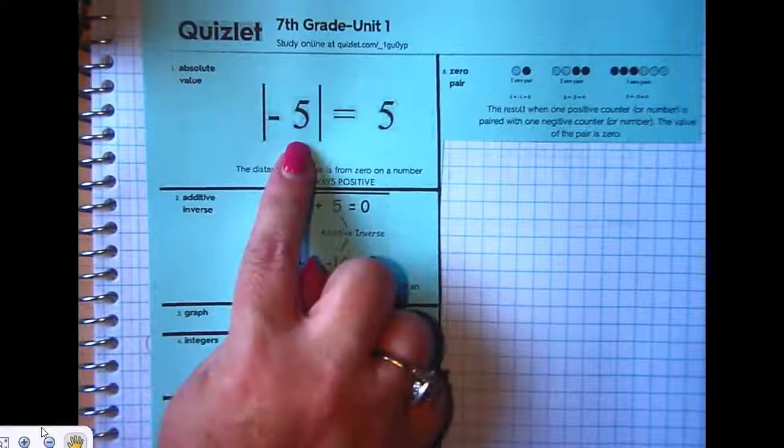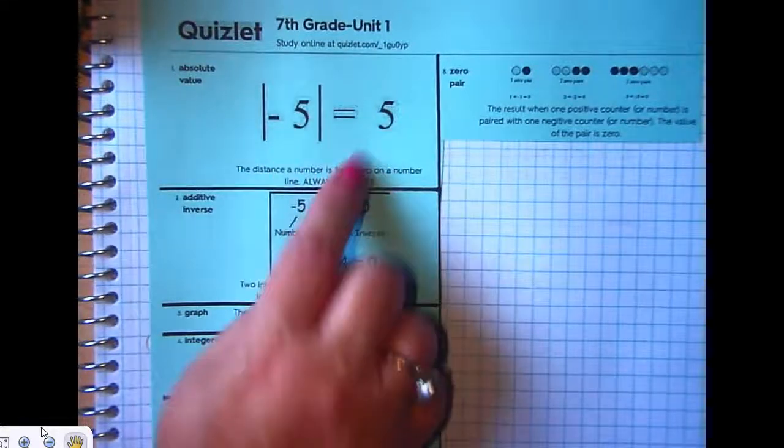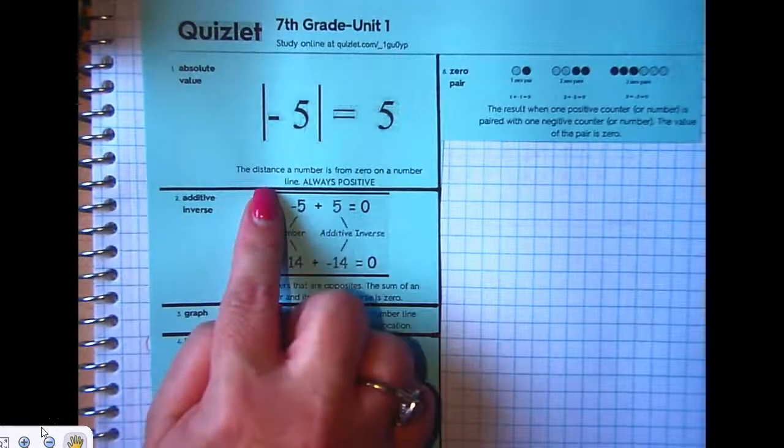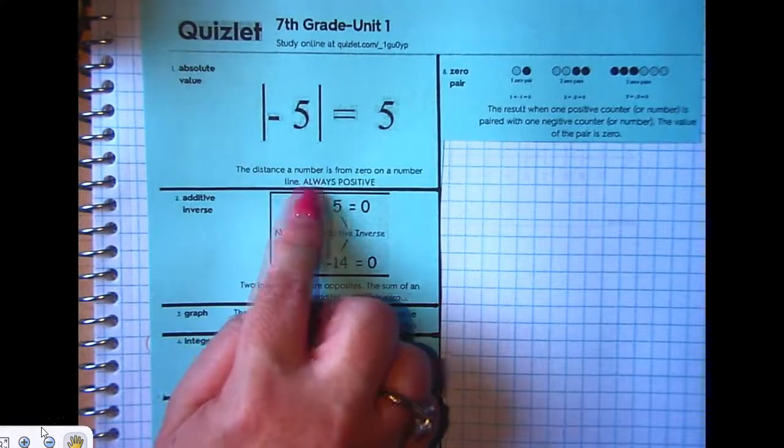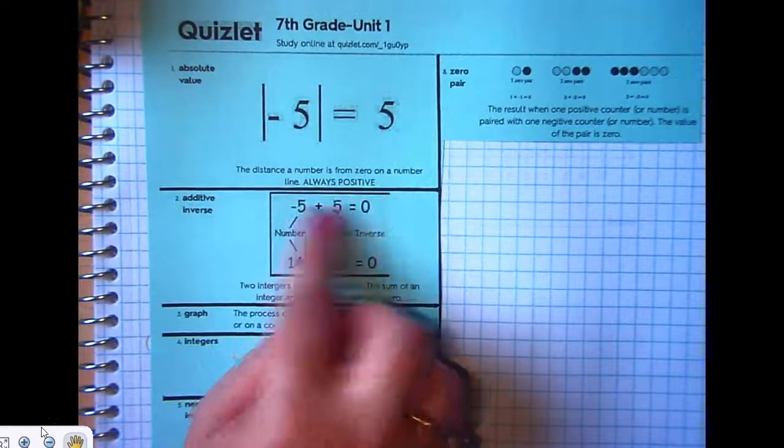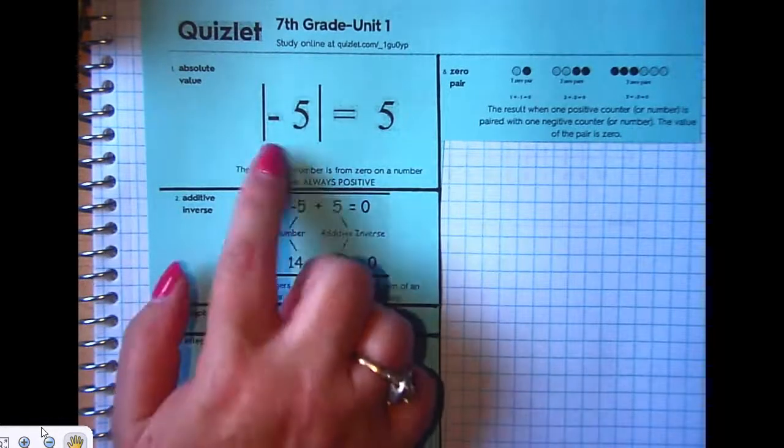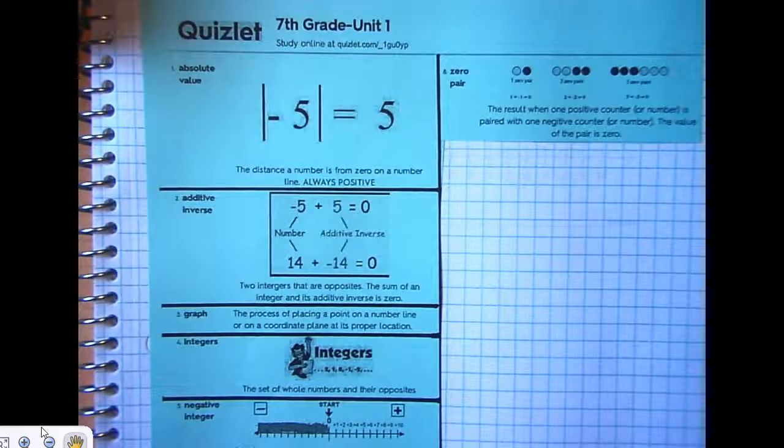We know the absolute value. The absolute value of negative 5 is 5 because the distance a number is from 0 on a number line is always positive. Absolute value is the distance a number is from 0 and distance is always positive.